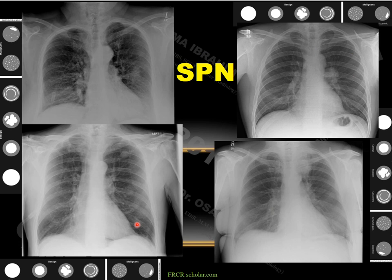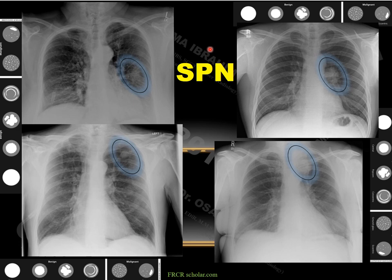Our presentation today is about solitary pulmonary nodules. As seen in these different patients, there is a solitary pulmonary nodule in the mid-zone of the left lung, another abutting the left hilum, and one at the upper paramediastinal region in the left upper lobe. This is the focus of today's talk: solitary pulmonary nodules.